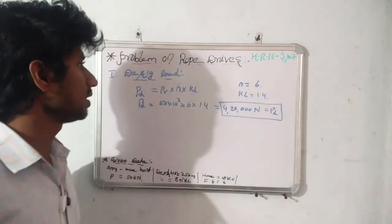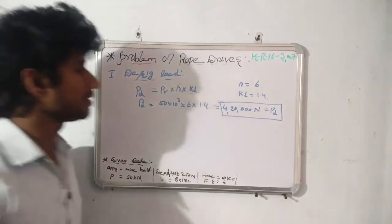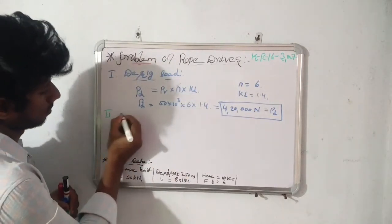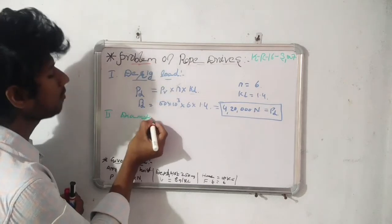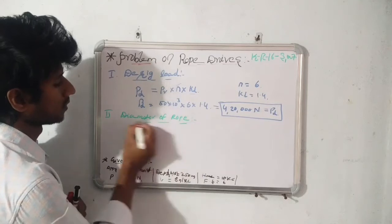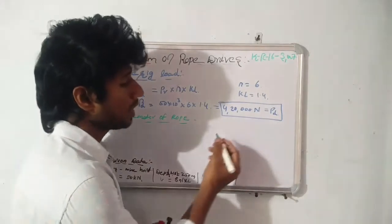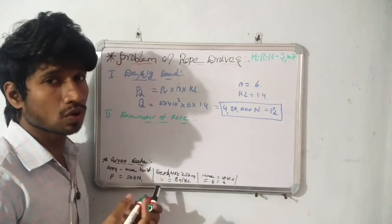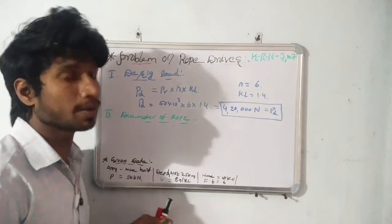This is the first step in the design of rope drive. The next step is finding the diameter of rope. We know the application of wire rope. Based on that, we are going to select the suitable type of wire rope for the application.